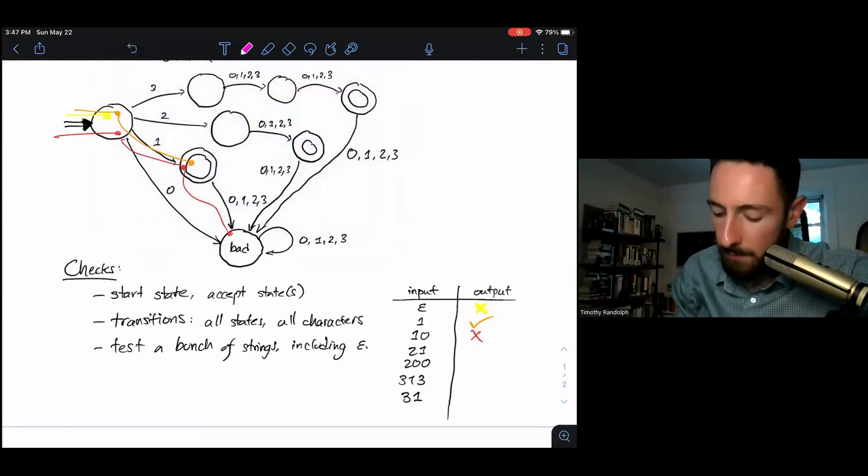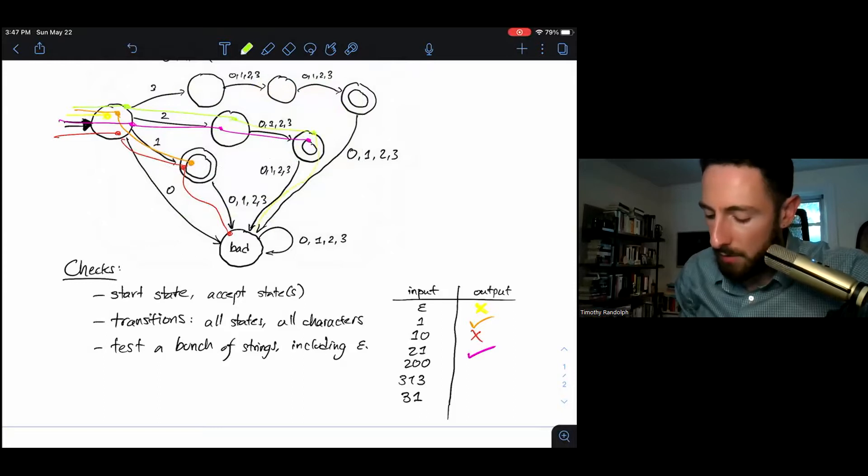Two-one: that'll take us from the start state to two, and then along this transition to one, that's an accept. Two-zero-zero: that'll take us here. And since we're too long, we'll go all the way down to the bad state. That's a reject.